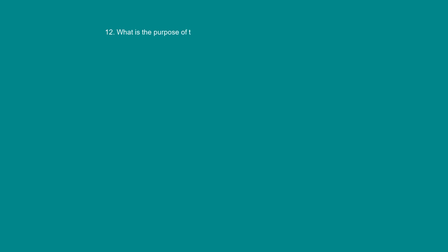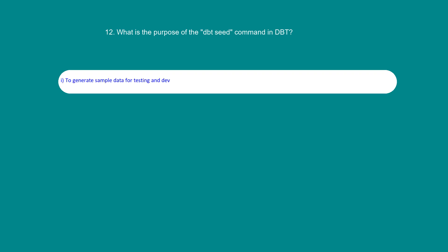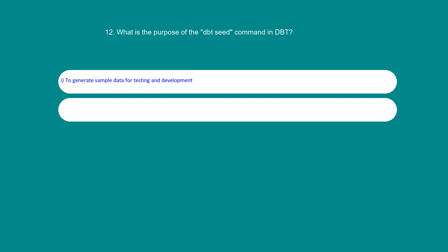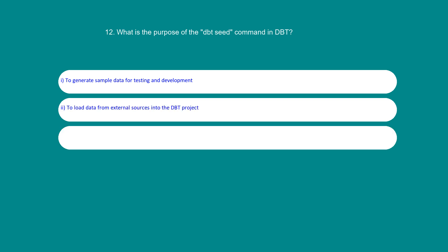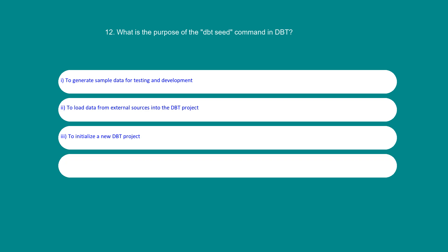What is the purpose of the dbt seed command in dbt? Option 1: To generate sample data for testing and development. Option 2: To load data from external sources into the dbt project. Option 3: To initialize a new dbt project. Option 4: To extract data from external sources into the dbt project. The answer is 1: To generate sample data for testing and development.